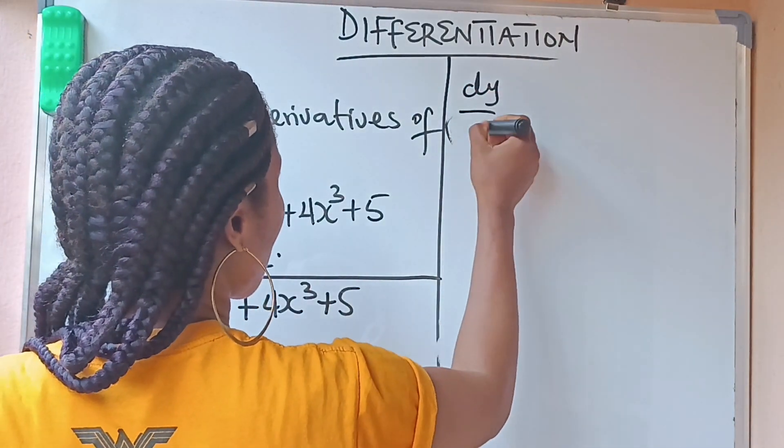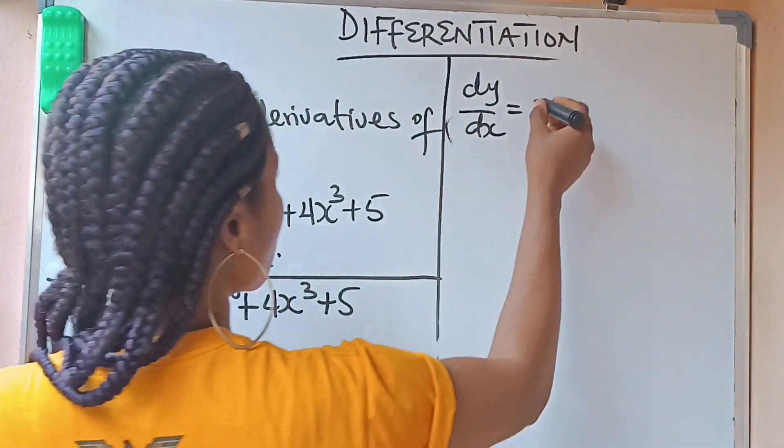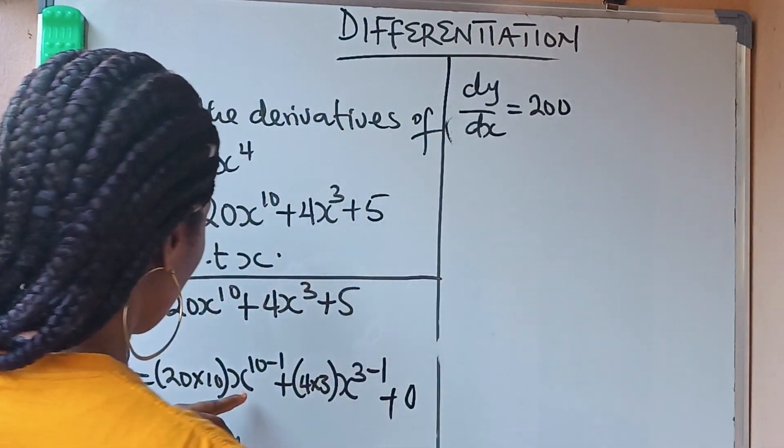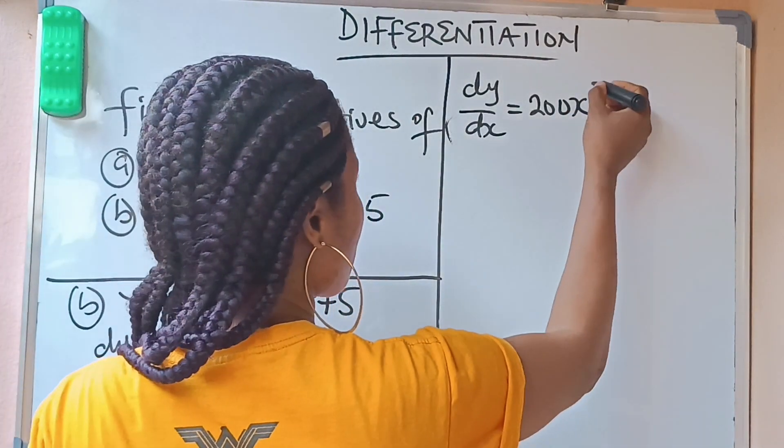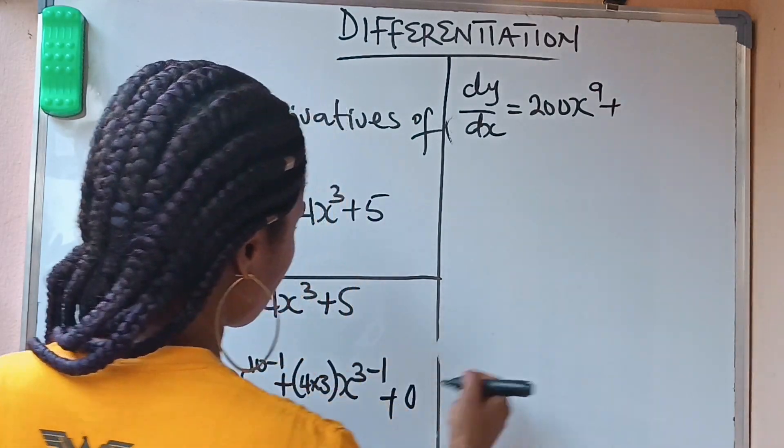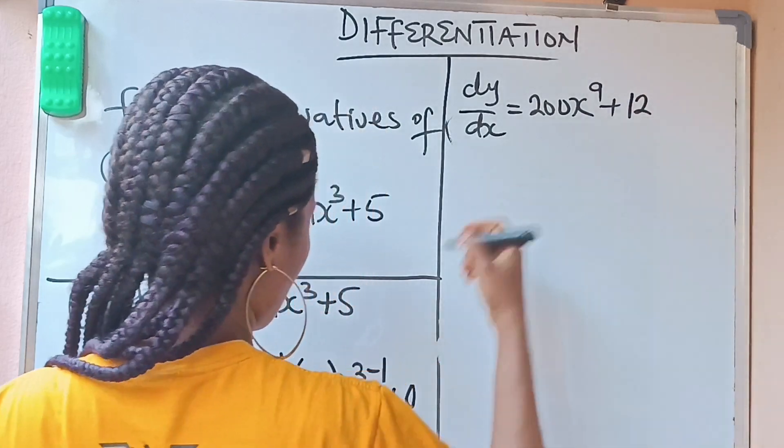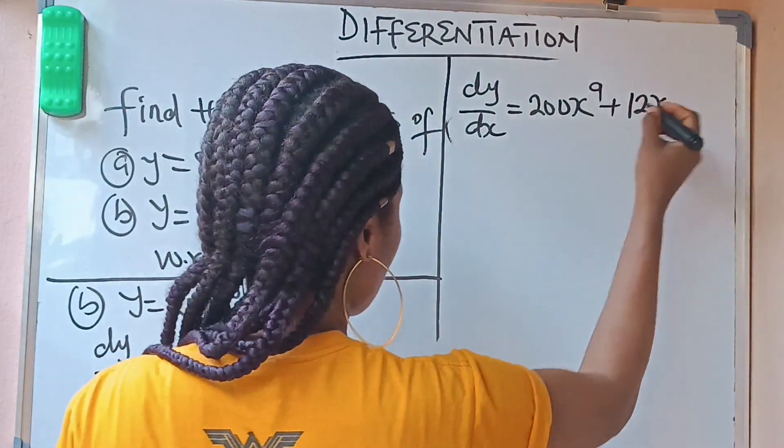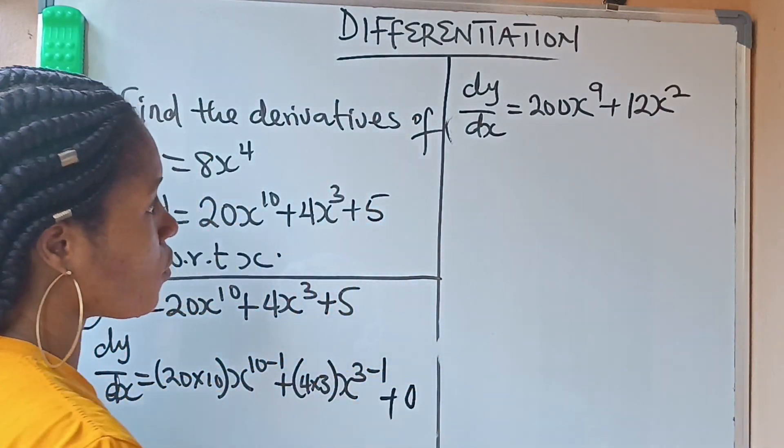We have that dy over dx is equal to 20 times 10. We give us what? 200. We write our x again. 10 minus 1. We give us what? 9. You write your 9. Plus, 4 times 3. We give us what? 12. You write your 12. Write x. 3 minus 1. We give us what? 2. This one is 0 now.